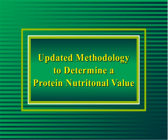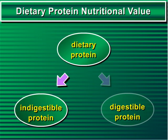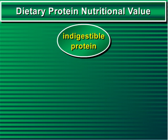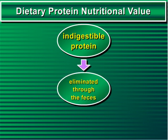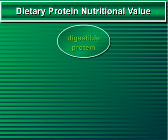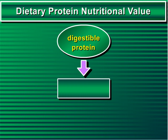Updated Methodology to Determine a Protein Nutritional Value. A dietary protein can be either indigestible or digestible. A protein is indigestible when it is eliminated through the feces; consequently, it is nutritionally useless. On the contrary, a dietary protein is digestible when it is enzymatically hydrolyzed in the digestive tract, thus releasing its constituent amino acids in the first 100 centimeters of the small intestine, where they are absorbed.